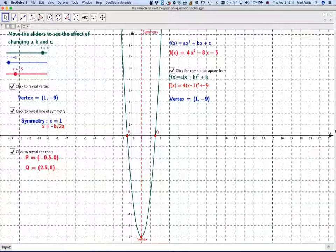Okay, so we get a root of x being equal to minus 0.5, and the other you can see is 2.5. Notice that the roots are equal distance from the line of symmetry.